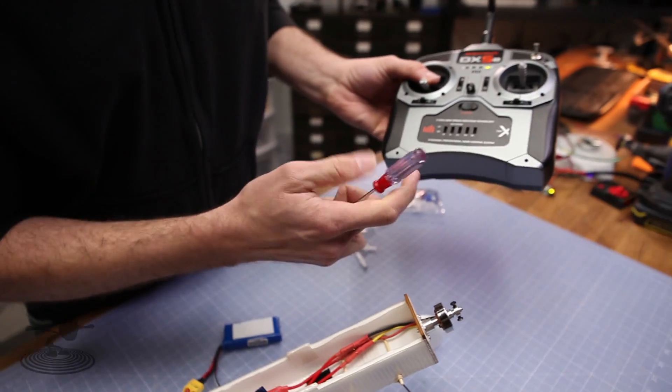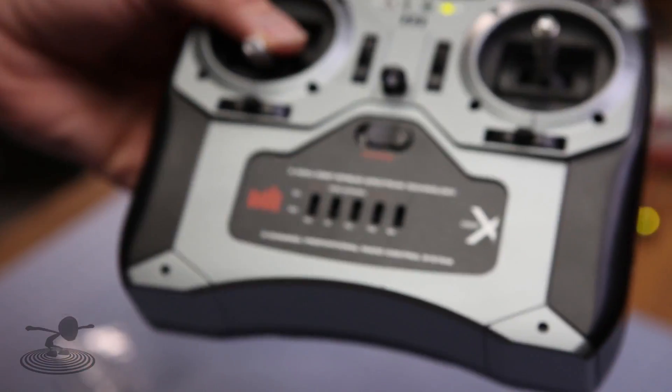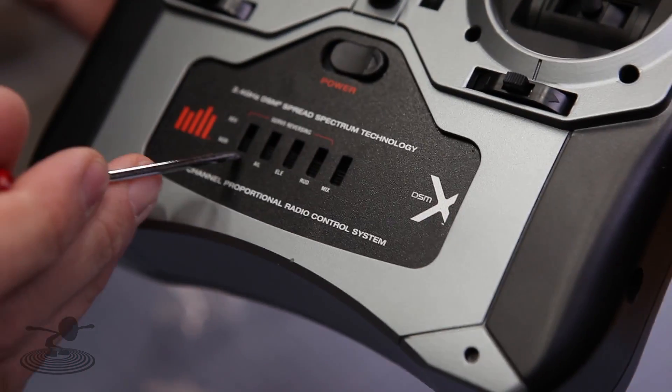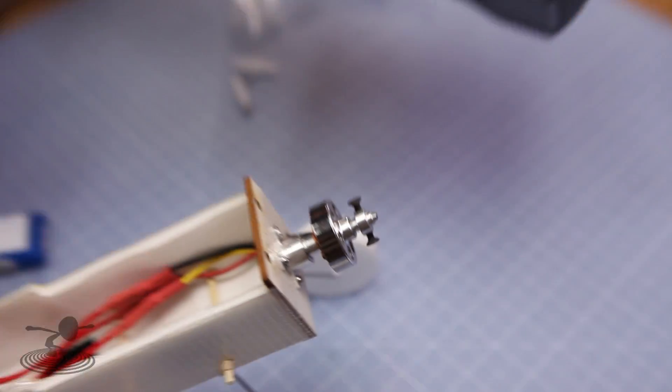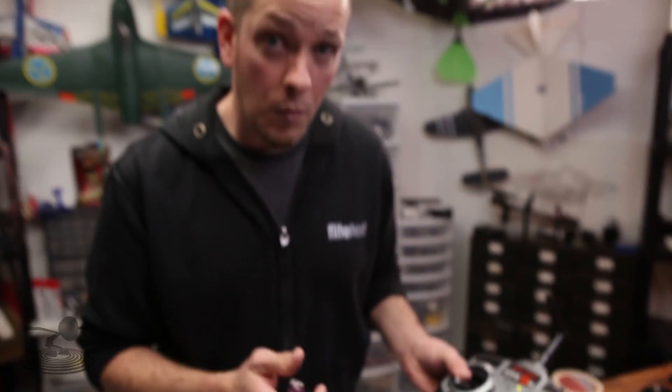Now, please keep in mind, when you're reversing throttles, always keep your prop off until the very end of the step. Because if you accidentally hit your throttle, you're going to activate your motor to full throttle. So that's a good reason to always keep your prop off while it's on the bench and you're working on your electronics.